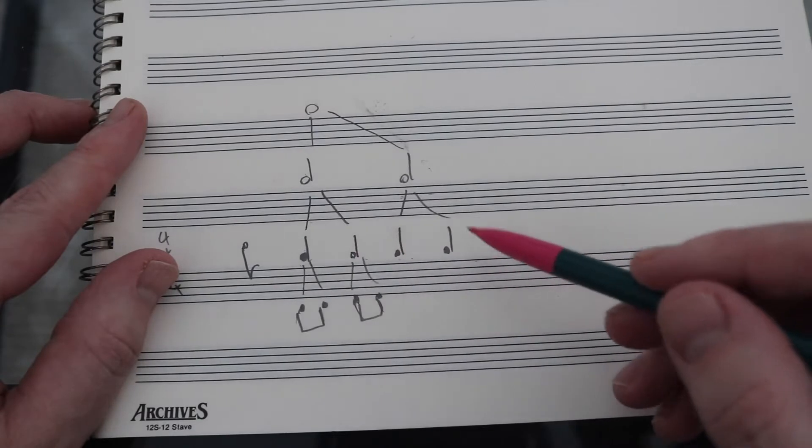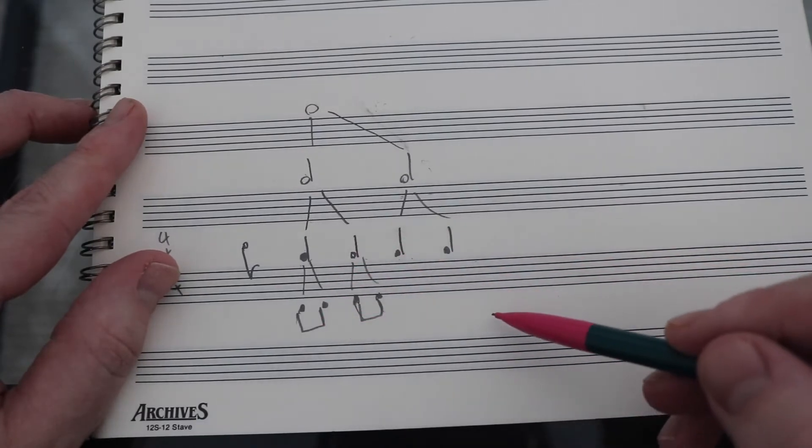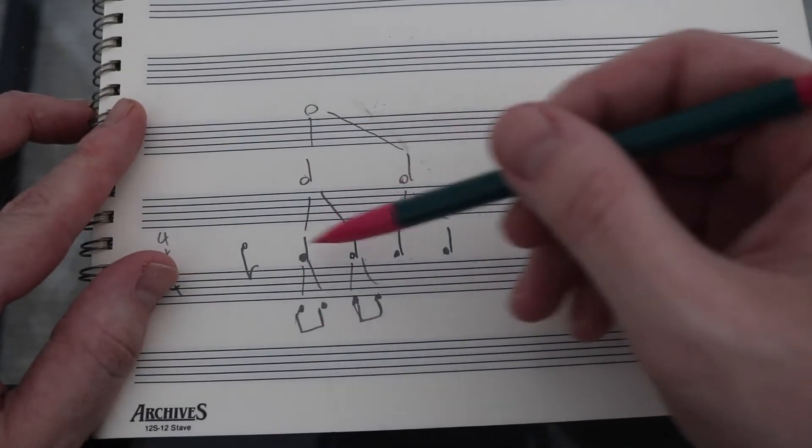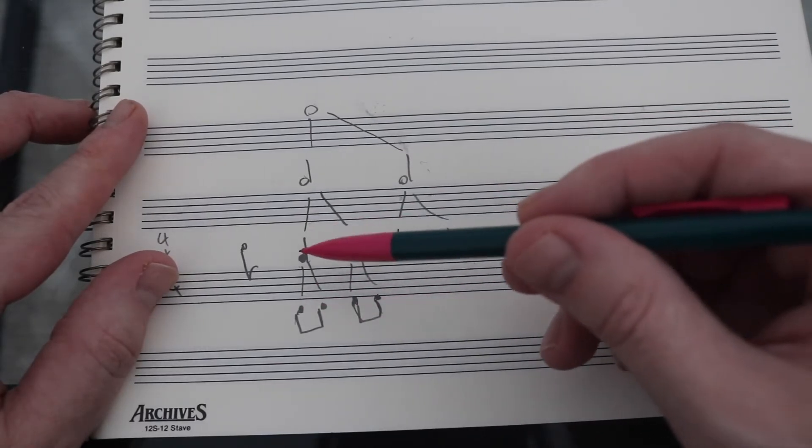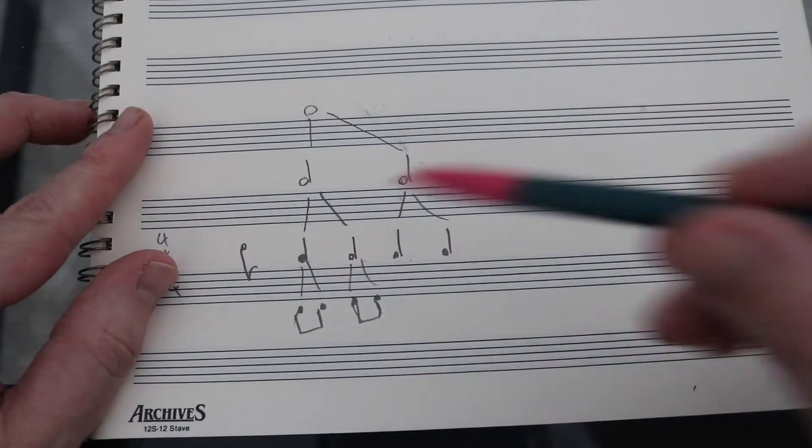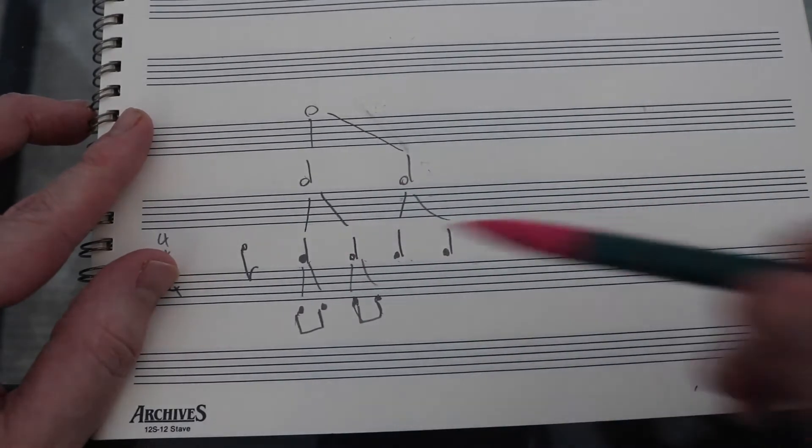Two eighth notes have the same amount of time as a quarter note. So, in the same amount of time as four quarter notes, we could have eight eighth notes. Remember I said in the last video that a quarter note is a quarter of a measure? Well, an eighth note is an eighth of a measure, so you could have eight of them total.